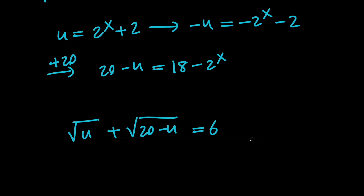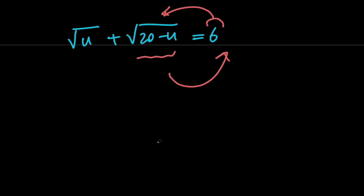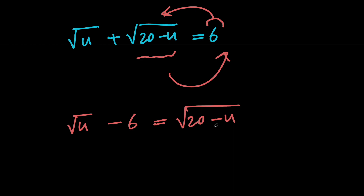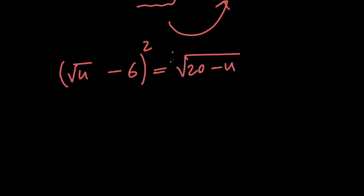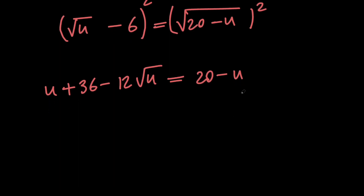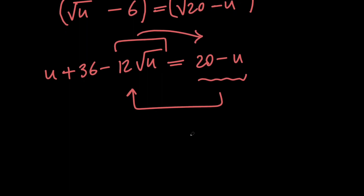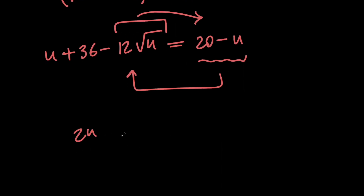We'll solve for u and then back-substitute for x. First, move terms to isolate one radical: square root of u minus 6 equals negative square root of (20 minus u). Squaring both sides gives u plus 36 minus 12 times the square root of u equals 20 minus u. Rearranging to isolate the radical again: 2u plus 16 equals 12 times the square root of u.